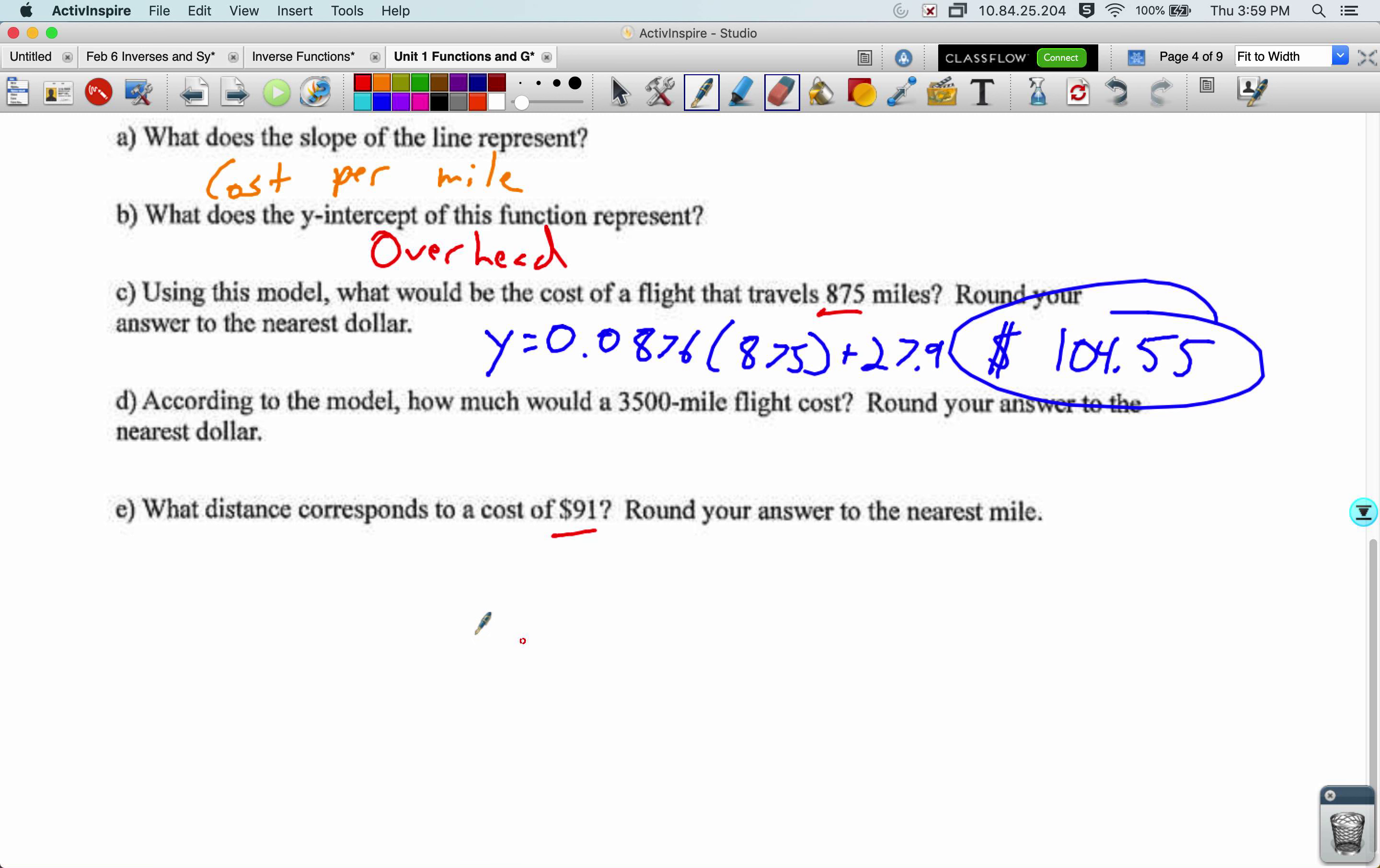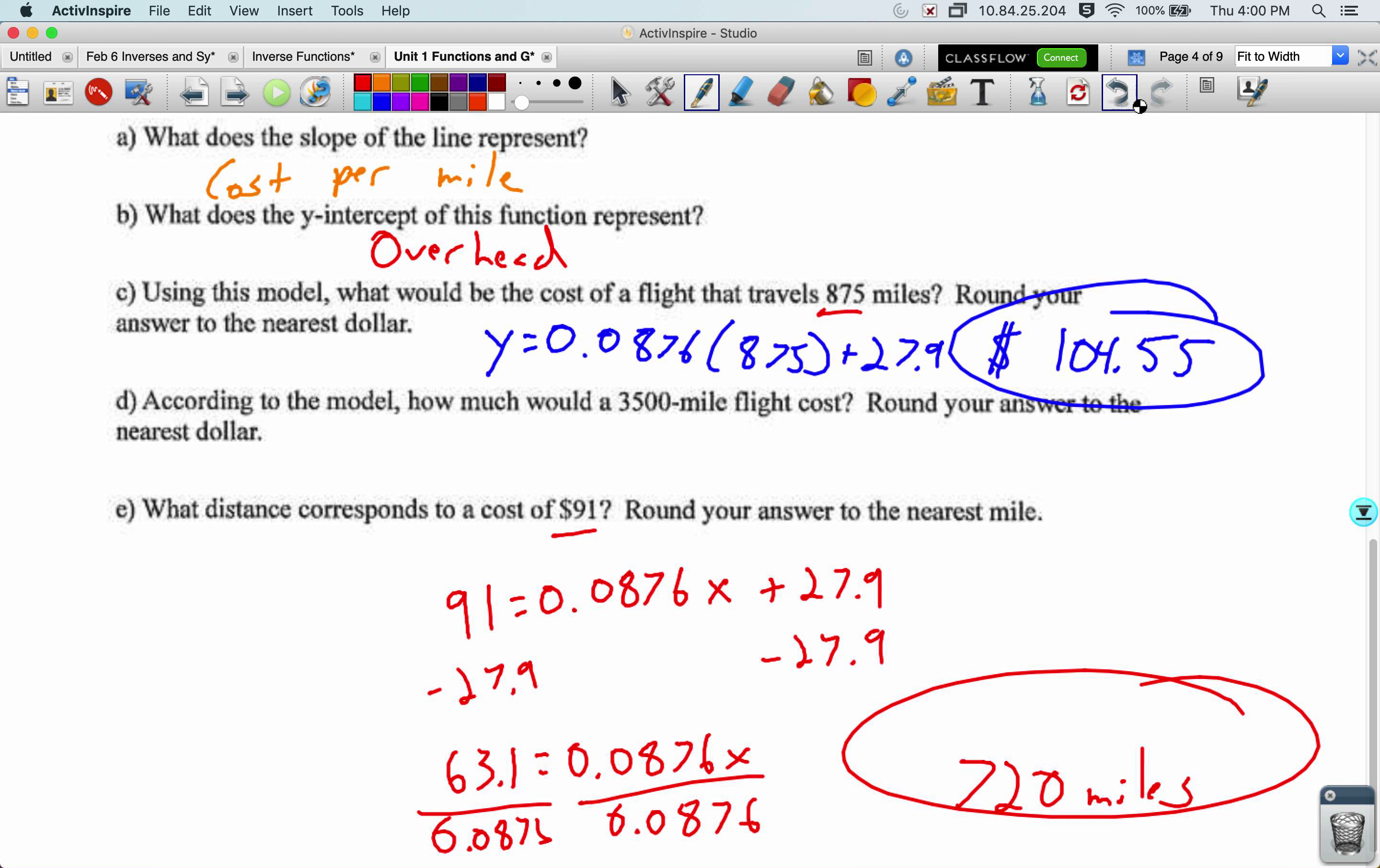For E, the cost of $91, or how far can you get for 91? The 91 goes in for y this time, and then we solve. And this does require just a few algebraic steps since our variable is now inside the expression. So we've got to subtract 27.9 from both sides. And so we've got our 91 minus 27.9 equals 63.1 equals 0.0876x. Divide both sides by this slope. Divide by 0.0876, and go 720 miles, approximately. Again, this is regression. That's not guaranteed, but approximately that's how far we're going to get.